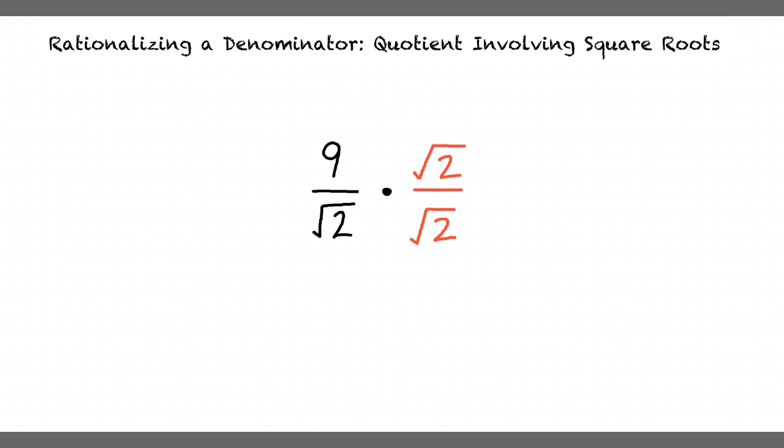The identity property of multiplication says that any value multiplied by 1 is equal to itself. An example of this would be a times 1 equals a, or 3 times 1 equals 3. The square root of 2 over the square root of 2 is equal to 1, so the identity property of multiplication holds here.